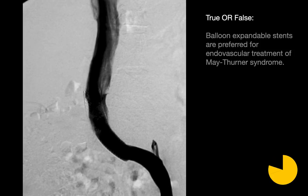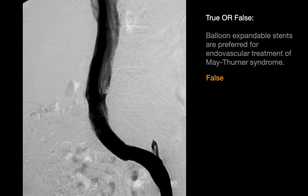True or false: balloon expandable stents are preferred for endovascular treatment of May-Thurner syndrome. The answer is false. Self-expanding rather than balloon expandable stents are preferred. A self-expanding stent can re-expand if intermittently squashed by the right common iliac artery, whereas a balloon expandable stent may remain deformed. That said, balloon expandable stents can be used if dilation and contouring with a self-expanding stent is insufficient.